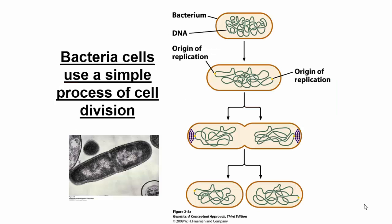In bacteria, cell division happens through a very simple process. We have a single bacterial chromosome — one circular piece of DNA — and there's an origin of replication on this chromosome. The origin of replication causes the DNA to replicate. Once the DNA replicates, the cell starts to divide, and we end up with two bacterial cells identical to the first. Very simple process. Today I want to focus on eukaryotic cell division, which is far more complex.